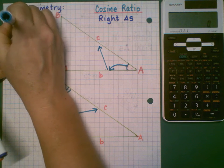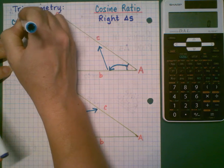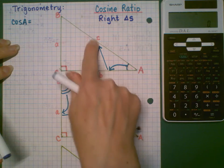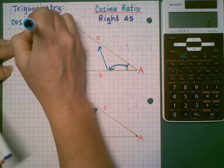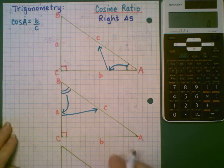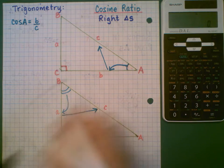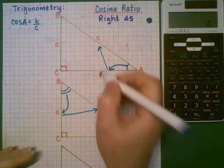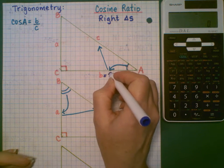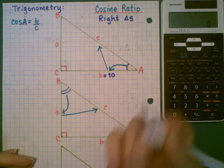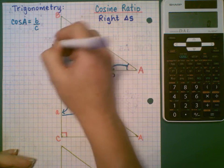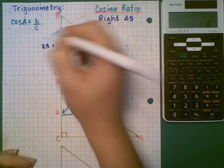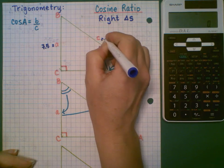So cosine of angle A is B over C. And in this case, the measurements for those sides, B is 10 centimeters long, A is 7 and a half, and C is 12 and a half.